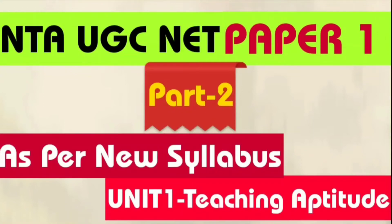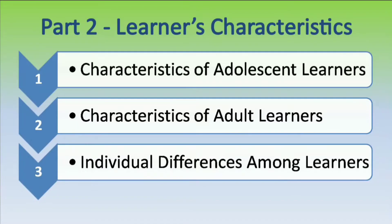Hello Learners! NTA UGC Net Paper 1 — the whole syllabus is discussed in this series. This is a playlist for the most classical class. Unit 1 is Teaching Attitude for two subjects. Part 2: Learner Characteristics. In this subject there are three topics: Characteristics of Adolescent Learners, Characteristics of Adult Learners, and Individual Differences Among Learners.